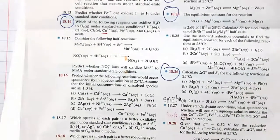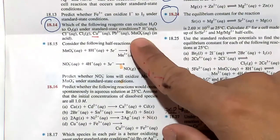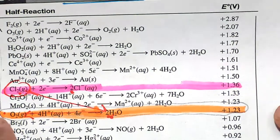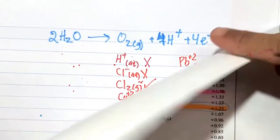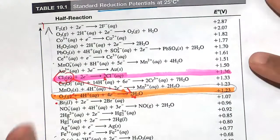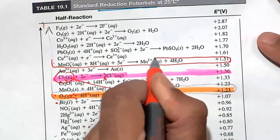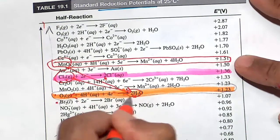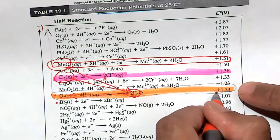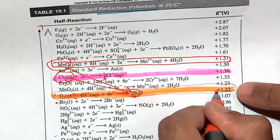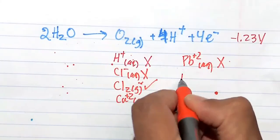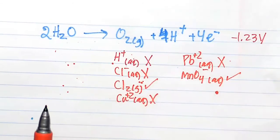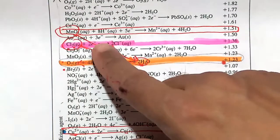Finally, MnO₄⁻ — the permanganate ion. Let's look at where it falls on the table. We want to flip the water reaction and get the oxidation version. MnO₄⁻ in acid at positive 1.51 volts can cause water to get oxidized. Flipping the water half-reaction gives minus 1.23 volts, and plus 1.51 minus 1.23 is still positive. So the permanganate ion in acid can oxidize water to oxygen gas, releasing four electrons. MnO₄⁻ can do that in the presence of acid H⁺.